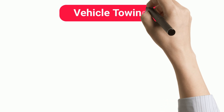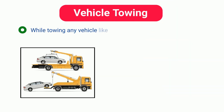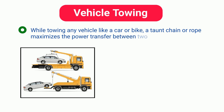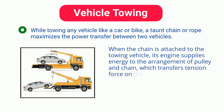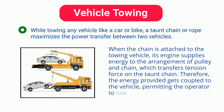Vehicle Towing. While towing any vehicle like a car or bike, a taut chain or rope maximizes the power transfer between the two vehicles. When the chain is attached to the towing vehicle, its engine supplies energy to the arrangement of pulley and chain, which transfers tension force on the taut chain. Therefore, the energy provided gets coupled to the vehicle, permitting the operator to tow it.